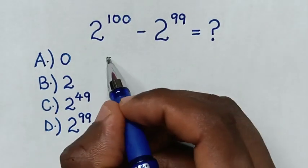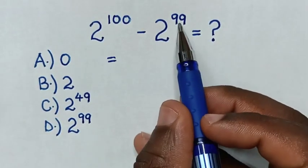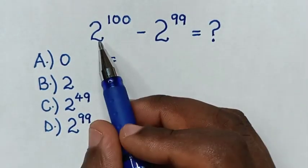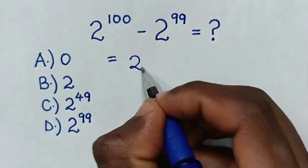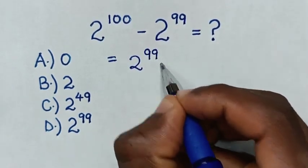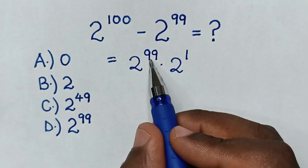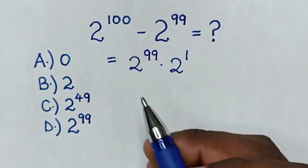So, it will be equal to... we make 2^99 common. 2^100 is the same as 2^99 times 2^1, because 99 plus 1 equals 100.